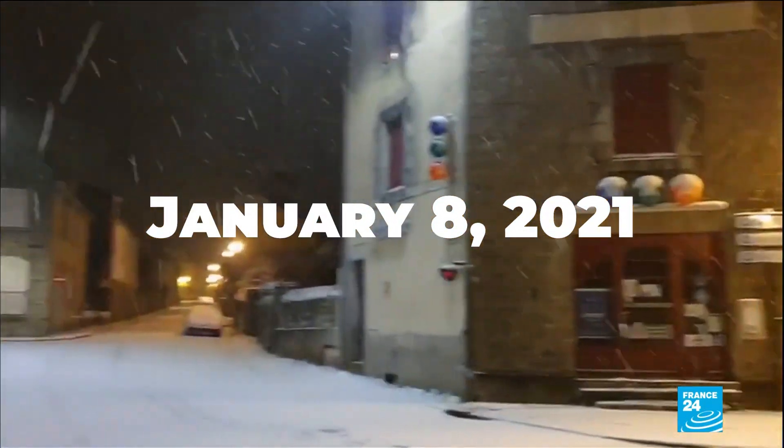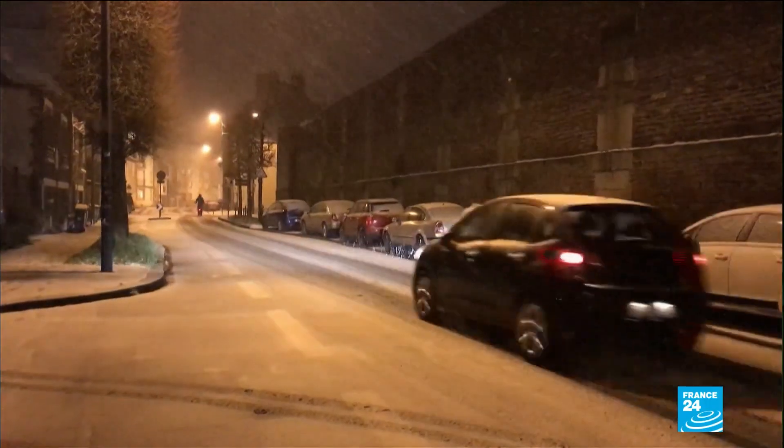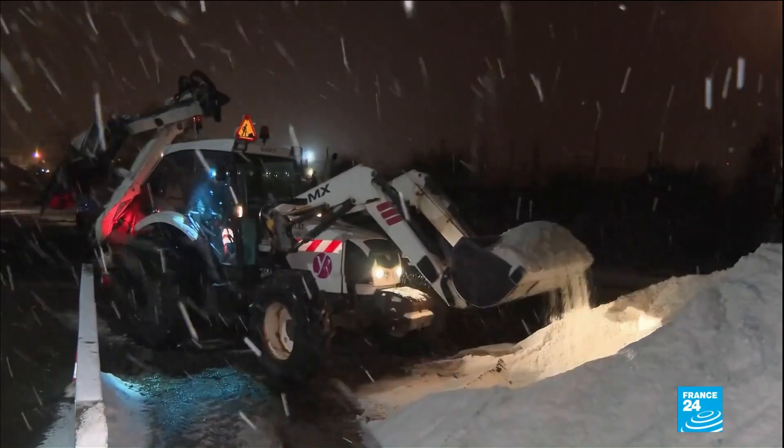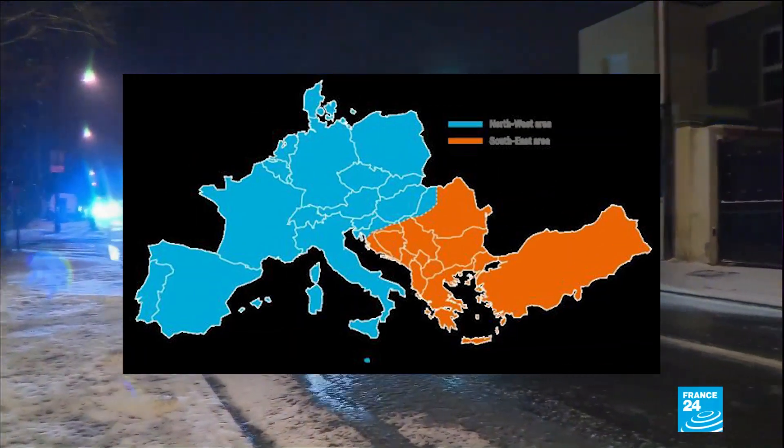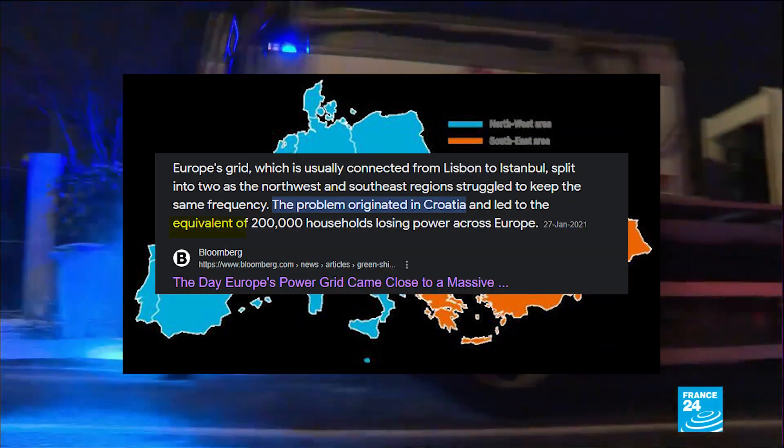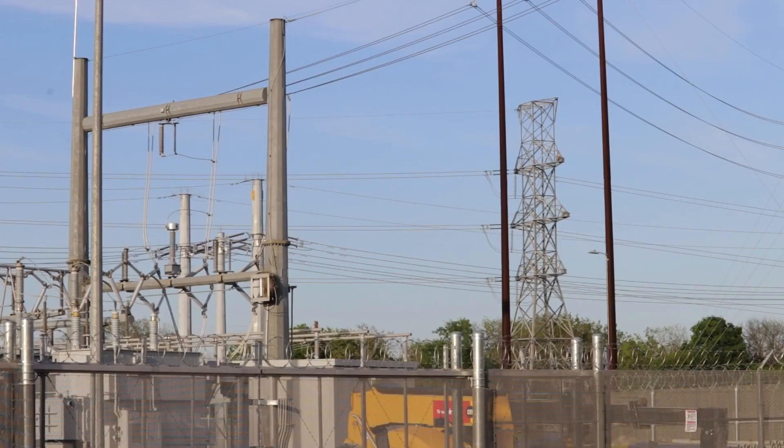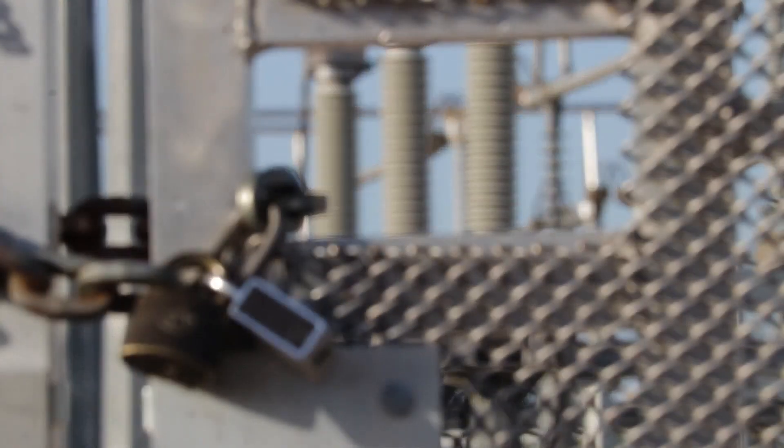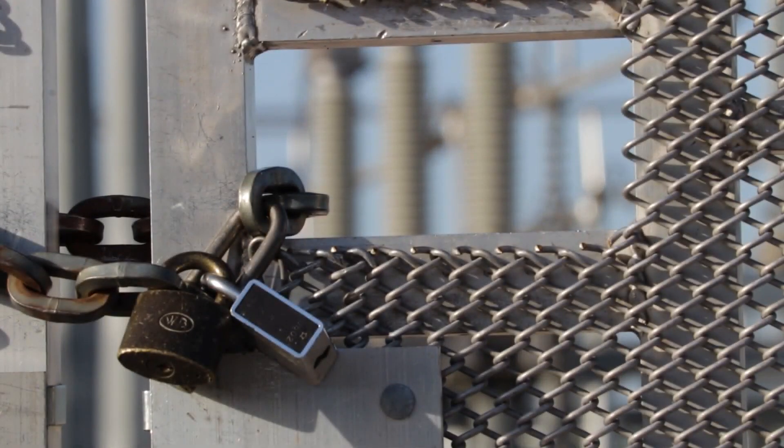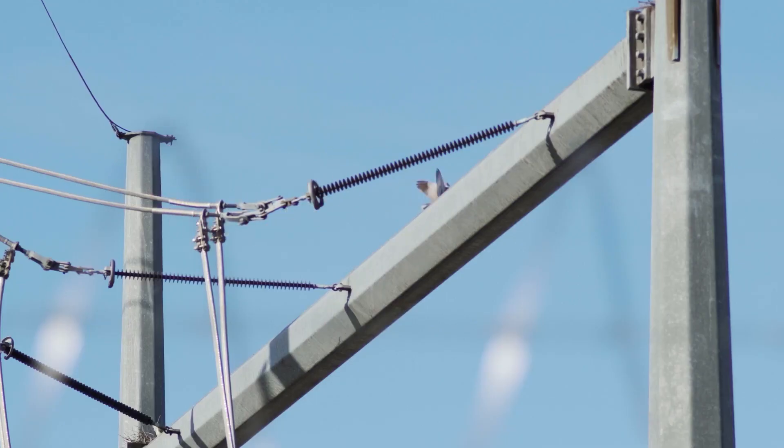On January 8, 2021, extreme cold weather caused power demand to surge across Western Europe, and its electricity network came close to a massive blackout. Europe's grid split into two and led to the equivalent of 200,000 households losing power across Europe. According to the U.S. President's Council of Economic Advisors, the U.S. Department of Energy's Office of Electricity Delivery and Energy Reliability, and the White House Office of Science and Technology, severe weather is the leading cause of power outages in the U.S. The age of the U.S. electrical grid, which was built over the last 100 years, is old in many areas and is more susceptible to power outages caused by severe weather.